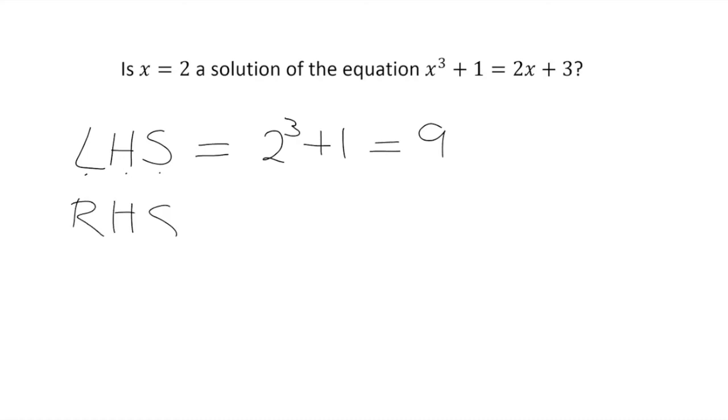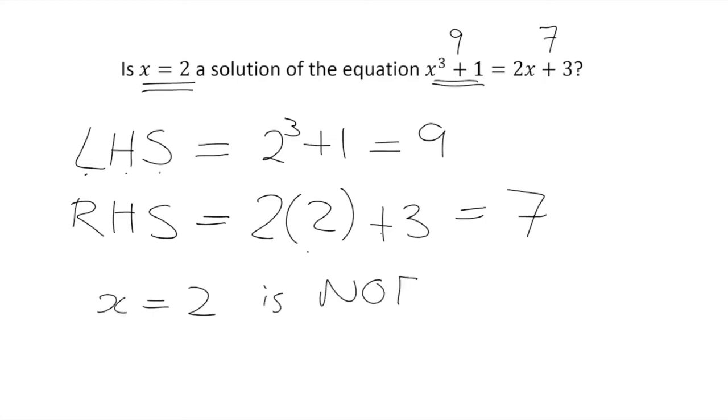What about our right hand side of the equation? Well, that'll be 2 multiplied by 2 plus 3. So when x is equal to 2, the right hand side of our equation is 4 plus 3, which is 7. Now we can answer our question. Is x equal to 2 a solution of the equation? Well, when we put it in, we get this being 9 and this being 7. So they're not equal. So x is equal to 2 is not a solution of this particular equation because it doesn't make this equation true. It doesn't make this equal to this.